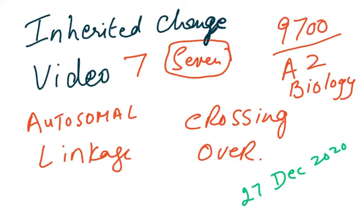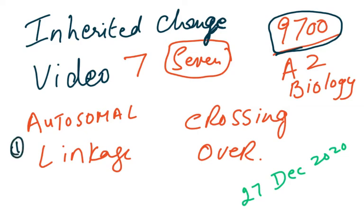This is the last video on inherited change — video 7 for syllabus 9700 A2 biology. We are going to discuss two topics not covered in the previous six videos: autosomal linkage and crossing over.